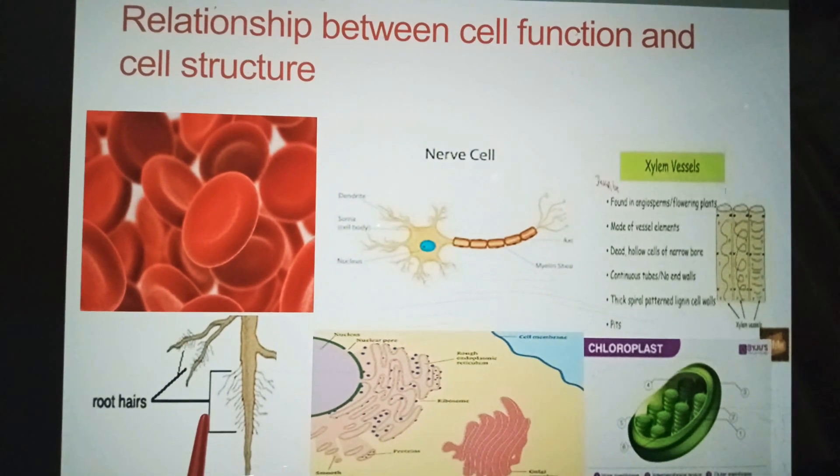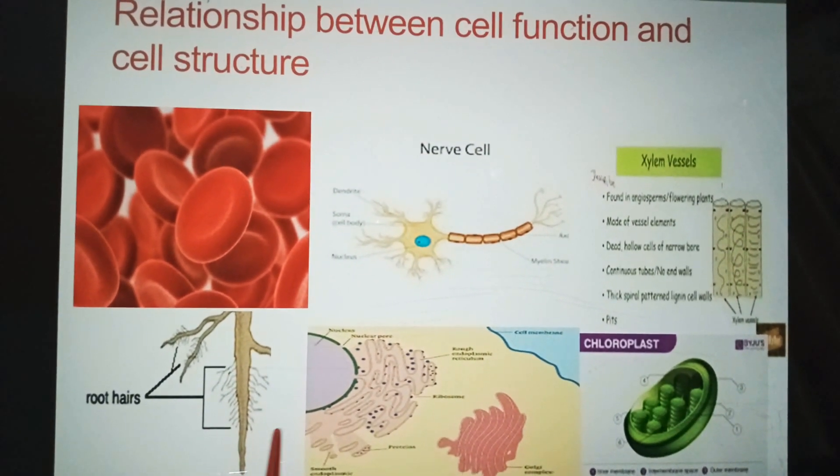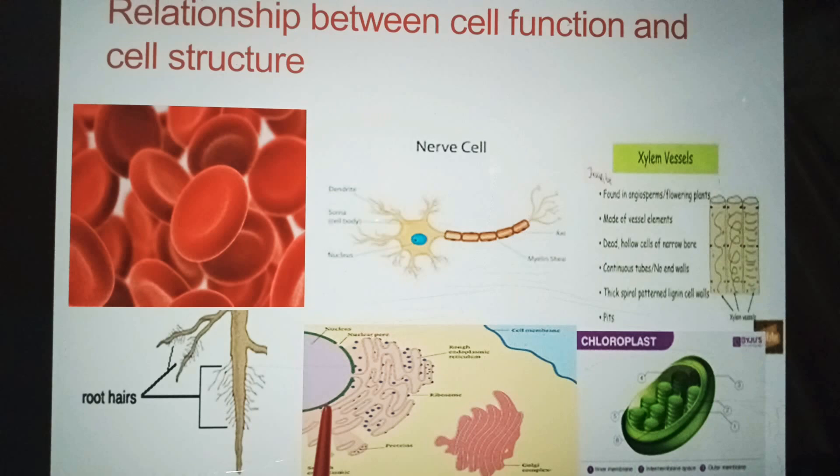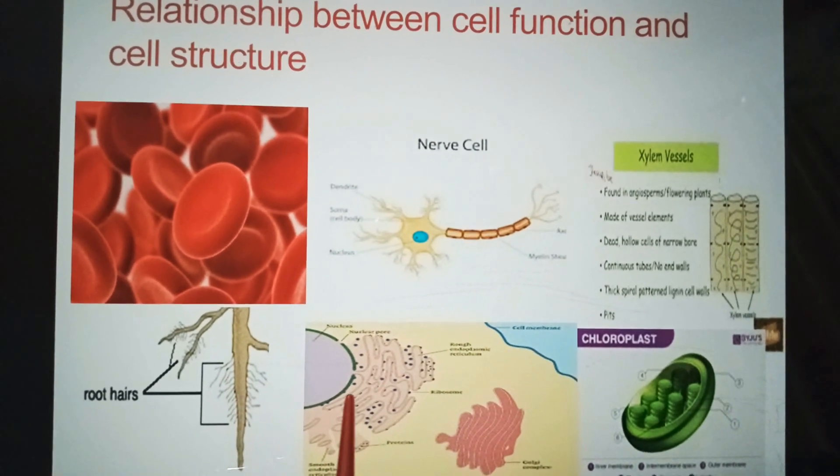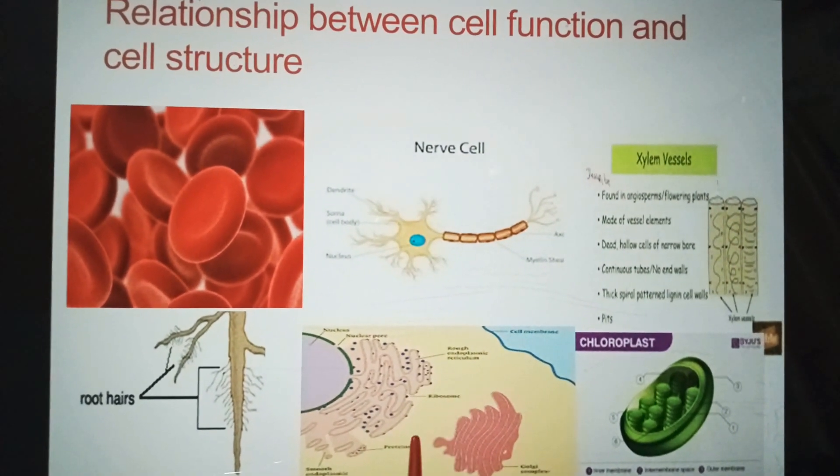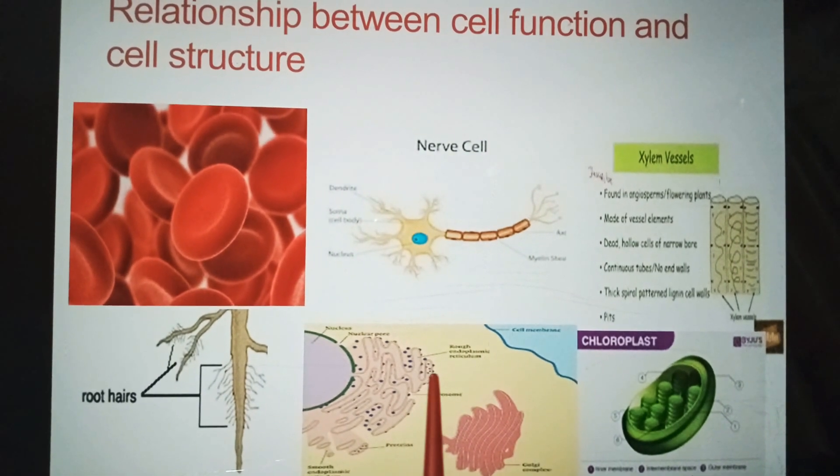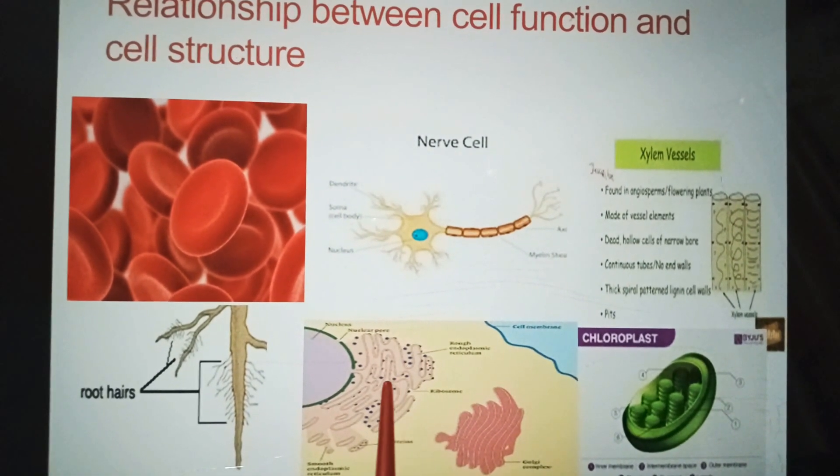Presence or absence of organelles: cells involved in making secretions have more complex endoplasmic reticulum and Golgi apparatus. Cells involved in photosynthesis have chloroplast.